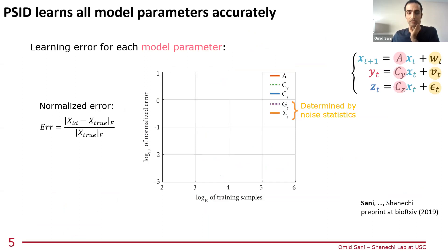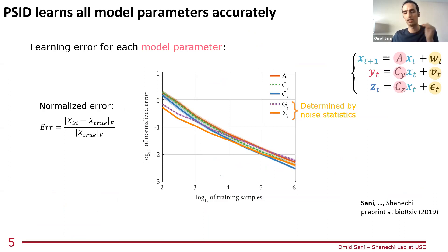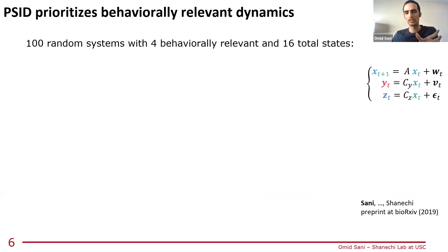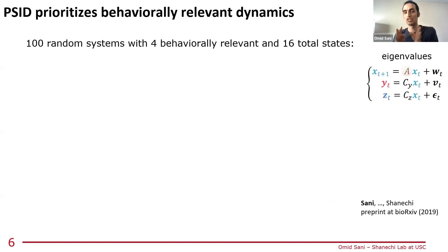As a general validation, when we apply this to many random models with random parameters, we can show that as more training data is provided, all model parameters are learned correctly with the error converging towards zero. We also show with simulations that PSID correctly prioritizes learning of behavior-relevant dynamics. Here we've simulated random models that have 16 latent states, but only four of them drive behavior. We want to see if we identify a model with only four latent dimensions, would the method learn the four behavior-relevant ones or any of the other ones?